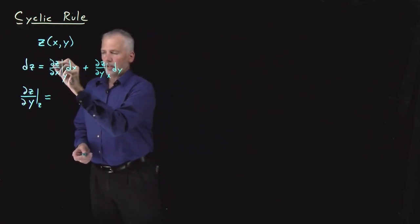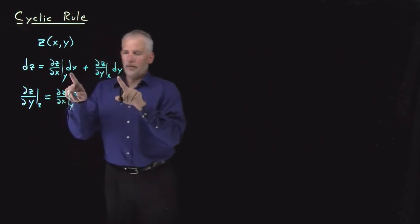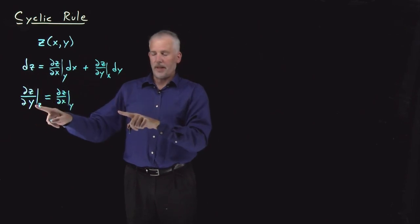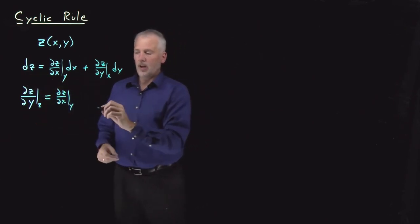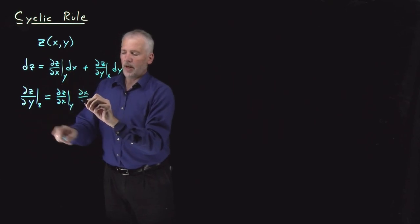So this coefficient, ∂z/∂x at constant y, stays just the way it is. And the differentials, the dx and the dy and the dz, those are the things I'm going to divide by dy or take the derivative with respect to y. So this leaves me with a ∂x/∂y at constant z.